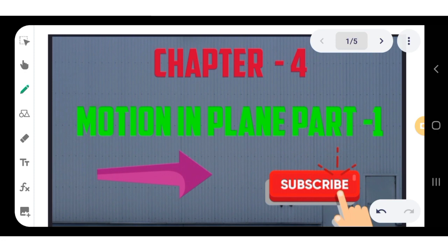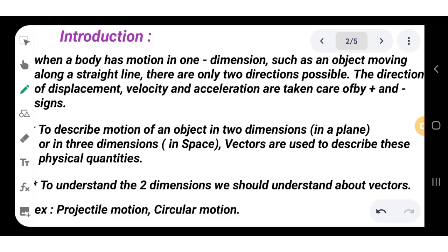Let's start. In the last chapter, we studied the motion of an object in a straight line. When a body has motion in one dimension, moving along a straight line, there are only two directions possible — forward or backward, or upward or downward. The direction of displacement, velocity, and acceleration can be indicated by positive or negative signs.